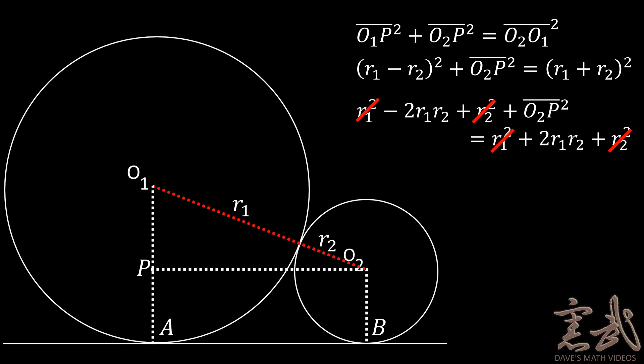Now we can cancel out the like terms on both sides. And after rearranging, we would get the relationship 4 times R1 times R2 is equal to AB squared.